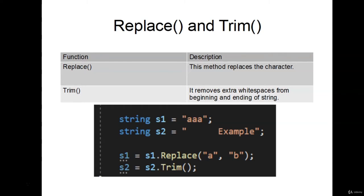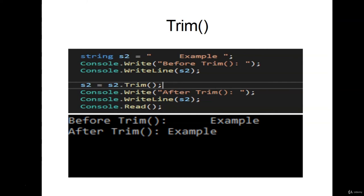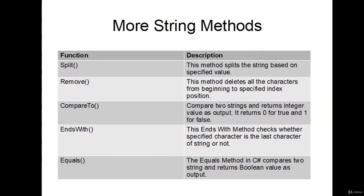The Trim method removes all the white space from the beginning and end of a string. S2 has a string with white space in front — we call S2.Trim() and it deletes all the white space from the beginning. Other methods include: Split, which splits a string based on a specific value; Remove, which deletes characters from the beginning to a specific index position; CompareTo, which compares two strings and returns an integer — 0 for false, 1 for true; EndsWith, which checks whether a specific character is the last in a string; and Equals, which returns a bool of true or false if a string equals another.